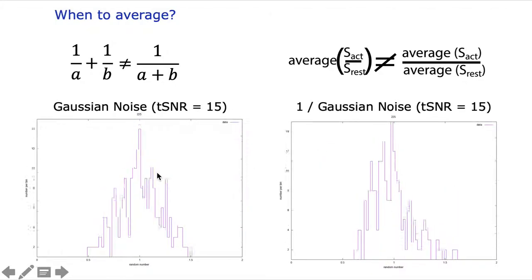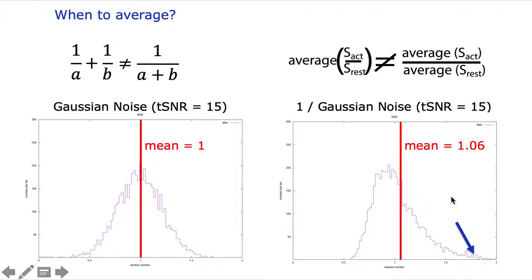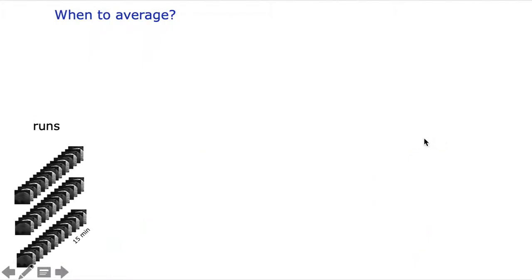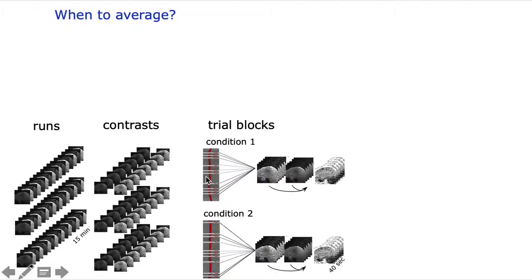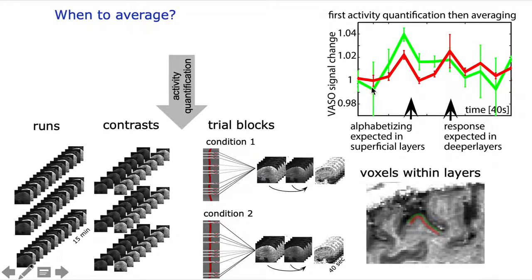For TSNRs of like 15 or so, you can see that Gaussian noise and vulnerable Gaussian noise can look very different, for example due to these side lobes, meaning you end up with different means too. We learned it's really beneficial to first average the heck out of the data before we even start to normalize and extract functional signal changes. We averaged across runs, across contrasts, across trial blocks, and even across voxels within layers and across neighboring time points before we started to compare signal activation and signal with rest.